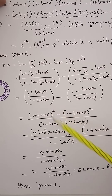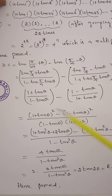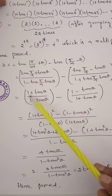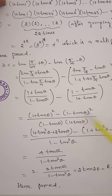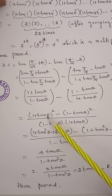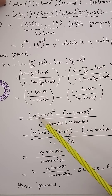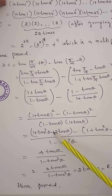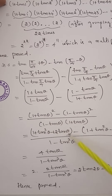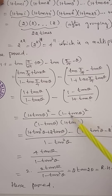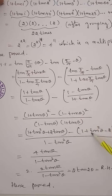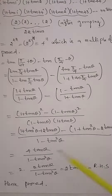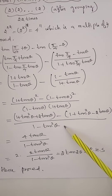Taking LCM as (1 − tan θ)(1 + tan θ), we cross multiply. The numerator becomes (1 + tan θ)² minus (1 − tan θ)². Applying the (A + B)² formula gives 1 + tan²θ + 2 tan θ, and (A − B)² gives 1 + tan²θ − 2 tan θ.